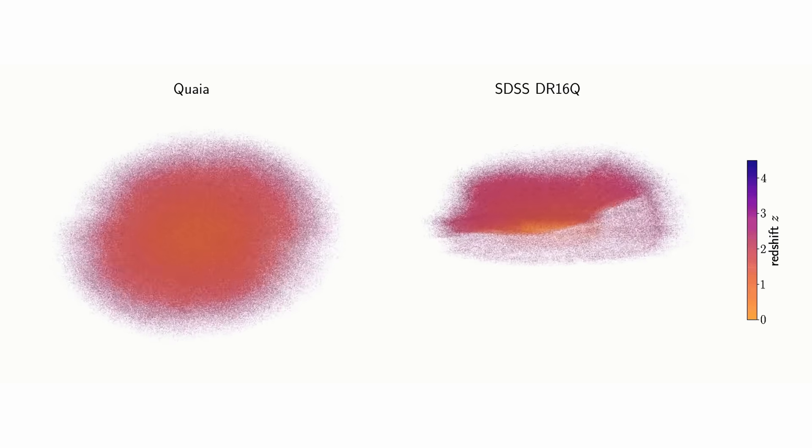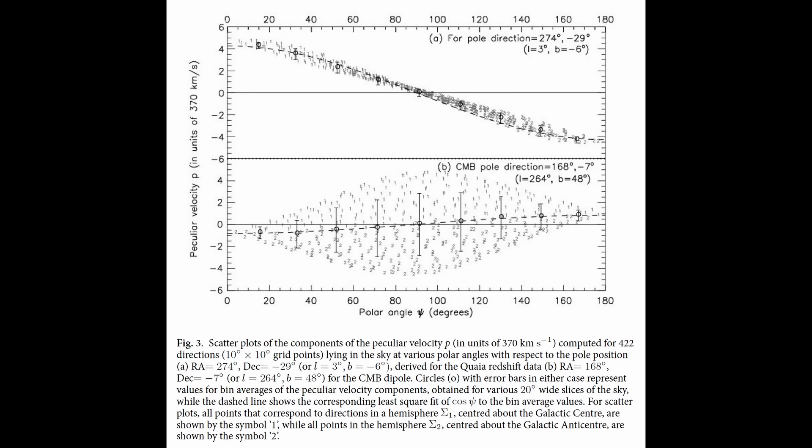The difficulty is that the quasar dipole doesn't vanish under scrutiny. It persists across more than a million objects and remains even when the sample is divided into independent subsets. And here is the core problem.